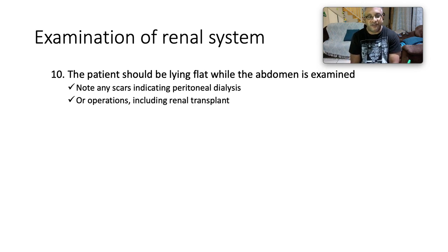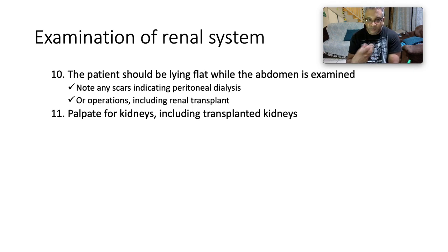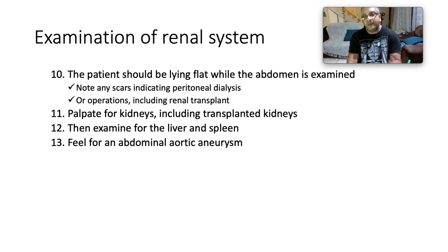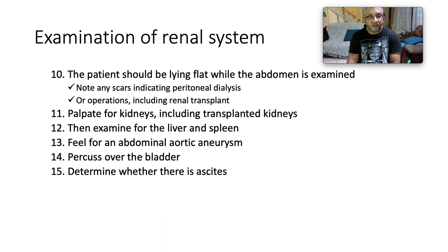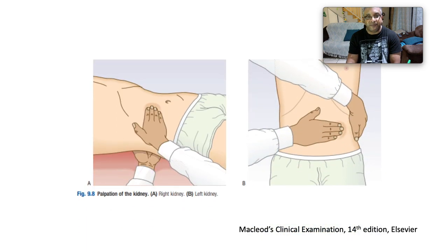With the patient lying flat, examine the abdomen. Note any scars from peritoneal dialysis, prior operations, or a renal transplant. Palpate the kidneys, liver, and spleen. Feel for an abdominal aortic aneurysm. Percuss over the bladder and determine whether there is ascites — signs include shifting dullness, fluid thrill, and the puddle sign. Listen for renal bruits approximately two centimetres above and to the left or right of the umbilicus. Rectal examination is indicated to detect prostatomegaly or bleeding.